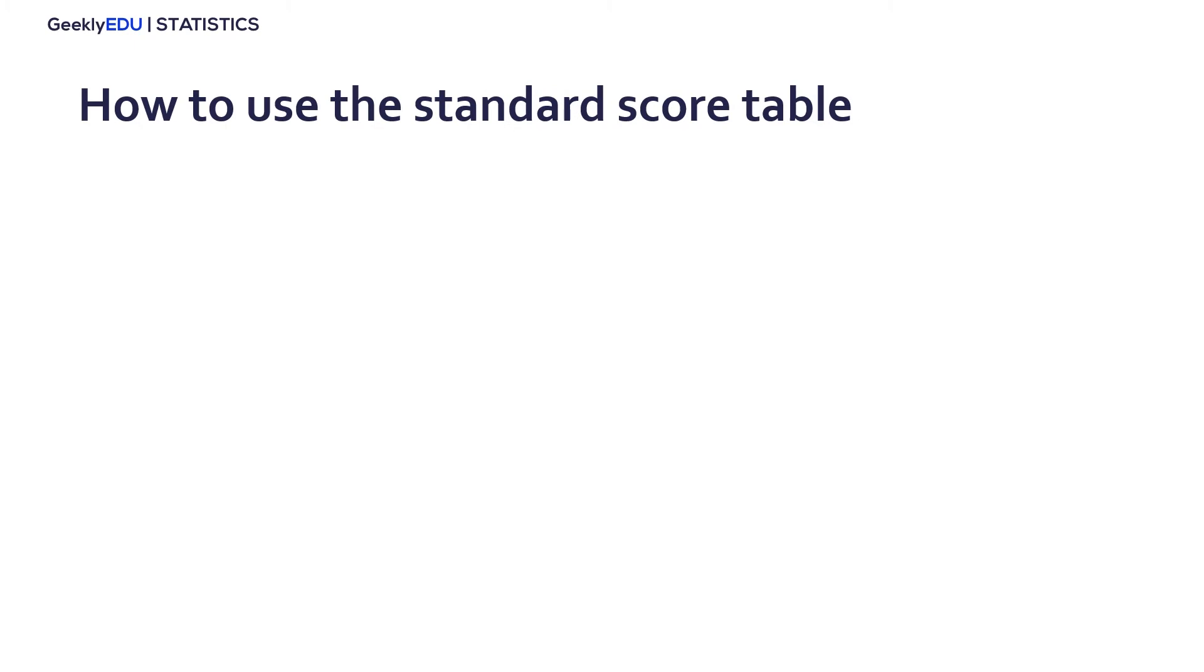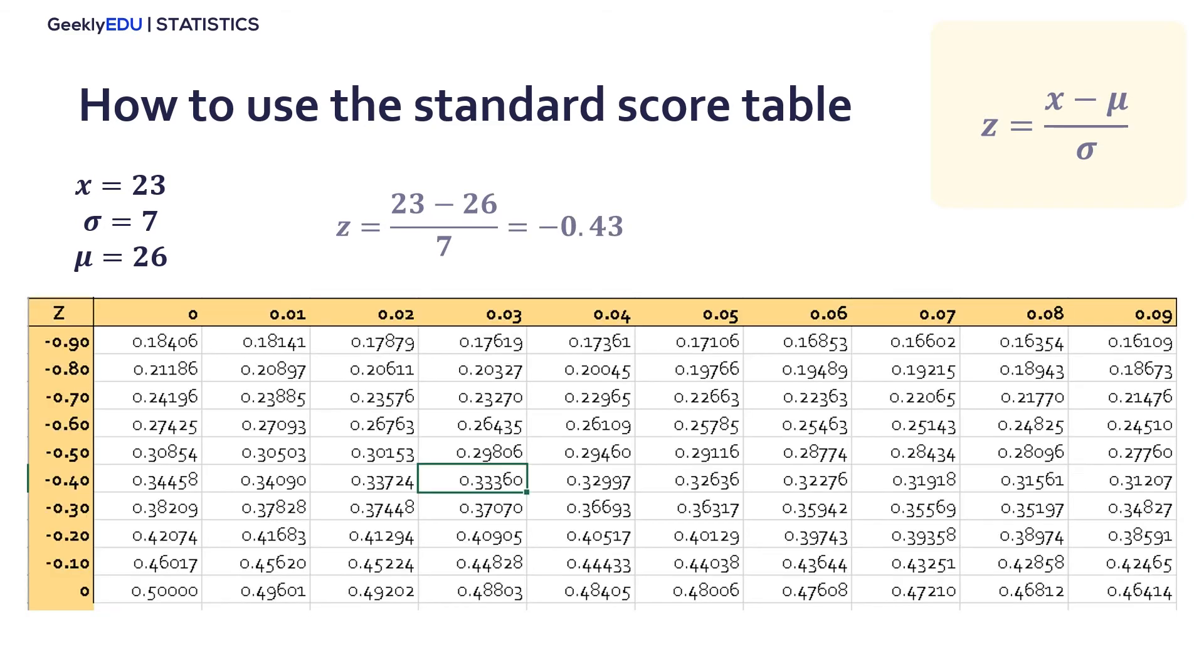The standard score table is easy to use, but at first can be a little tricky. First, you have to calculate the standard score. Let's suppose we have an x-score equal to 23, a standard deviation of 7, and a mean of 26. Using the formula, we get a z-score equal to minus 0.43. We go to our book, our document, and we will have data for values less than 0 and greater than 0. In this case, our standard score is smaller than 0. In the left side, we have to look for the first decimal. For this example, 4.